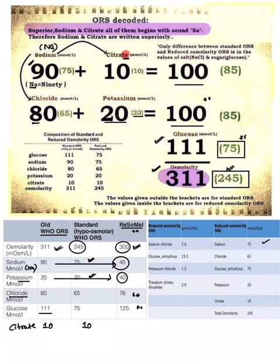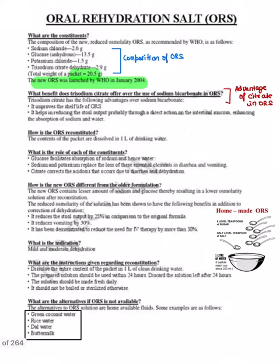This is the same thing in grams per liter: sodium chloride is 2.6, glucose is 13.5, potassium is 1.5, and trisodium citrate - even if you don't remember it's fine, not worth remembering. Remember the total weight of ORS packet is 20.5 grams, and this new ORS was launched by WHO in January 2004.